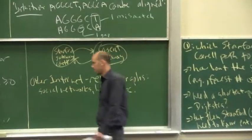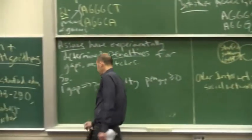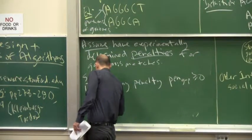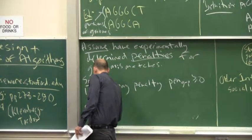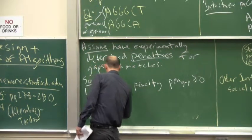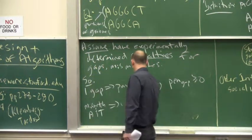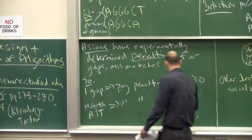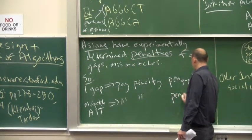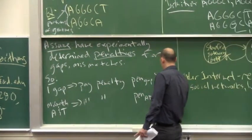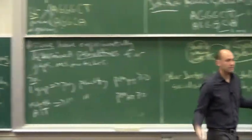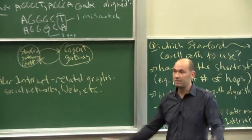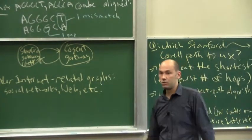Similarly, if you mismatch a given pair of letters, say A and T, you're also told as part of the input that you will pay some penalty specific to A and T. So maybe you're told every time you match A and T together, it costs you 12 bucks. Every gap costs you five; every mismatch of A and T costs you 12.